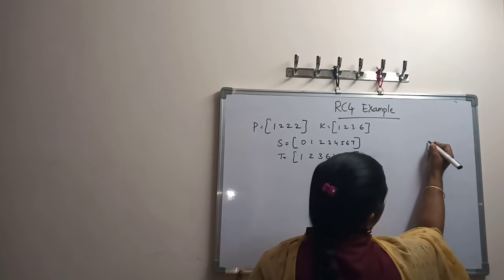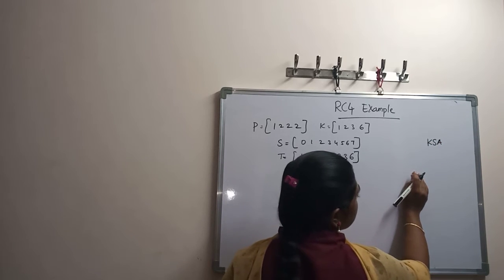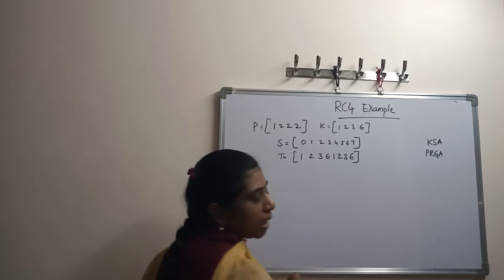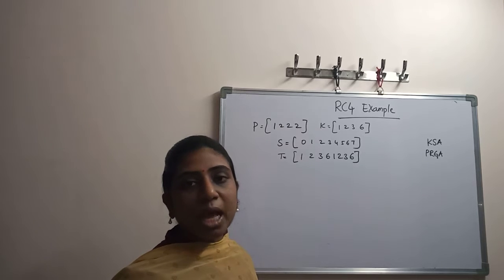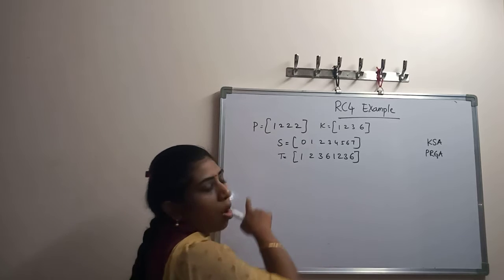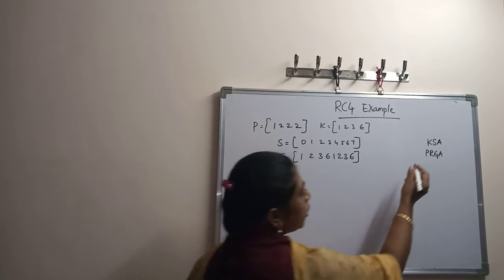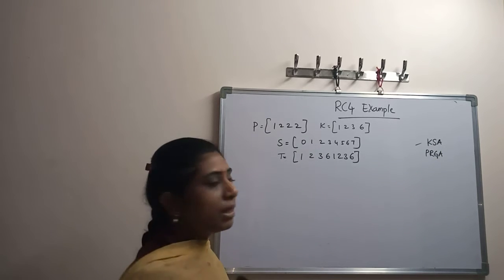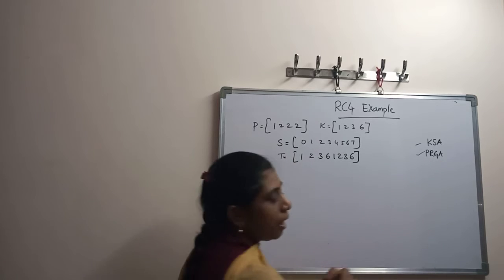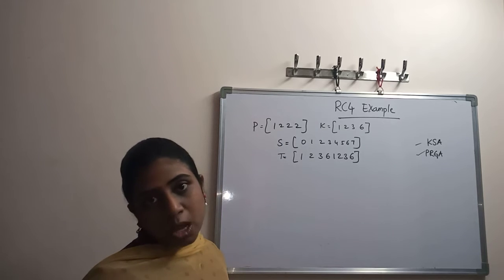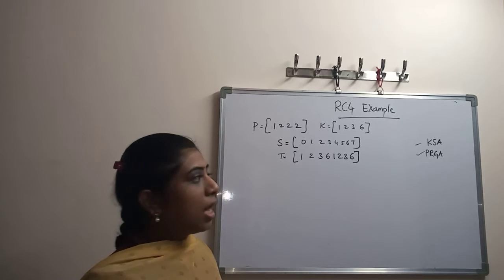In the RC4 algorithm, there are two algorithms: KSA and PRGA, that is pseudo-random generator algorithm. In the KSA algorithm, we perform initialization permutation where we swap all the values. Then we generate the key using PRGA, and this key is XORed with the plain text to get the output.